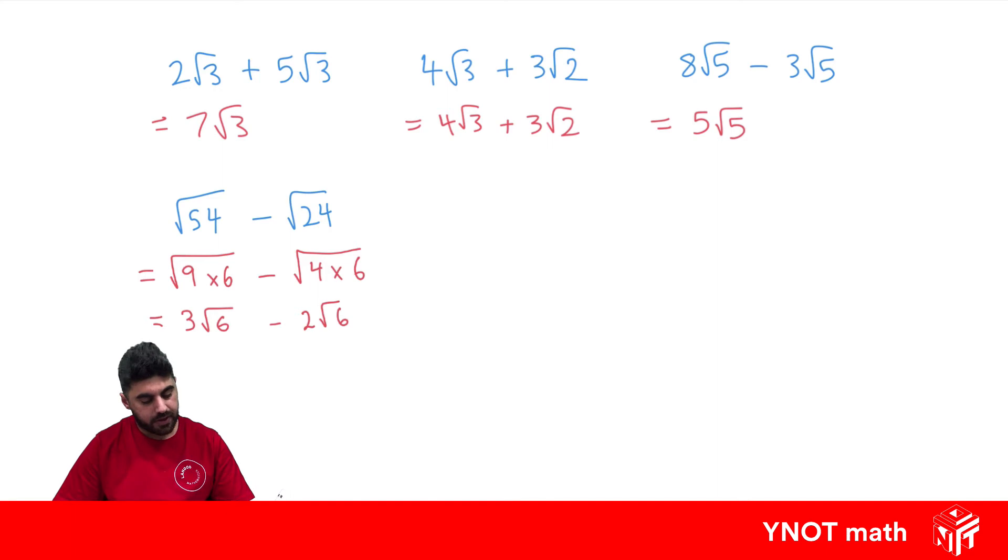And now you can see they are like surds and we can subtract them. 3 minus 2 is 1, so we get 1 root 6, but we just write root 6.